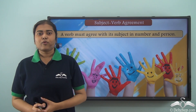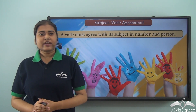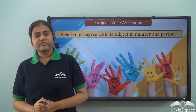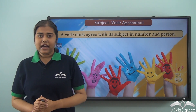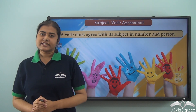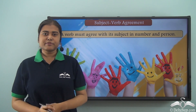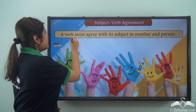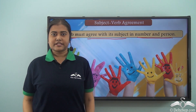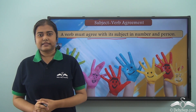We have already learnt what a subject is. In a sentence we have two parts: the subject and the predicate, and the predicate always contains the verb. A verb in a sentence has certain rules to follow when it is used with a certain subject. The primary rule is that a verb must agree with its subject in number and person. Now let us see some examples to understand this.